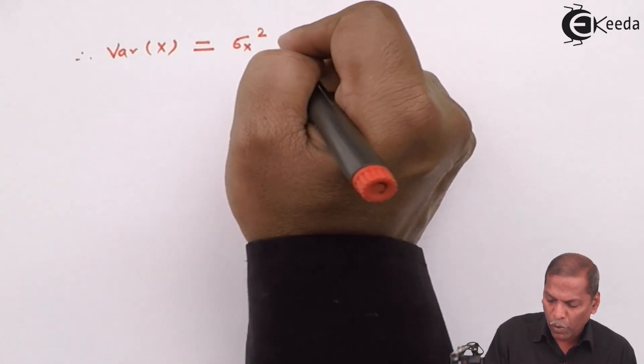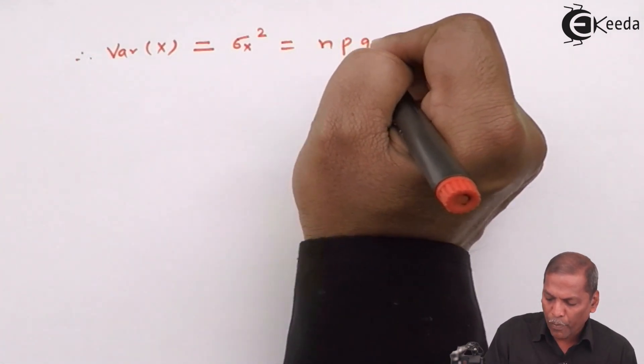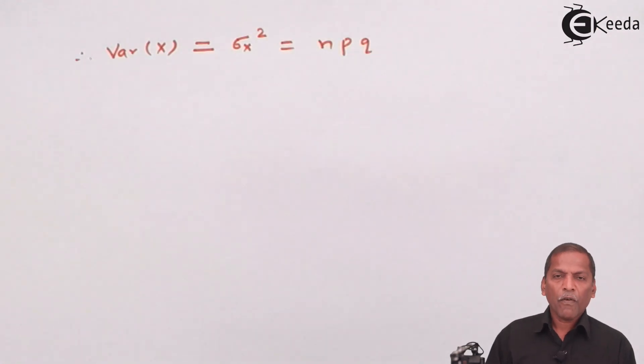Is equal to the formula is NPQ, where N represent number of trial, P represent probability of success, and Q represent probability of failure.